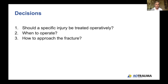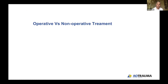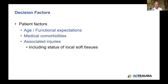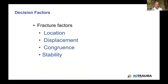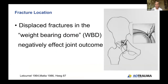The initial decisions for a specific injury are: does it need to be operated on, when do you operate, and what approach do you use? The choice of surgery or not depends on patient factors — age, functional expectations, comorbidities, associated injuries, and condition of soft tissues — as well as fracture factors. For the fracture, I think about the classification, location, displacement, congruency of the hip, and whether the hip will be stable in the position it's in.